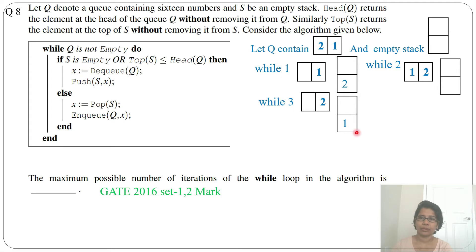So next we'll do while 4. So while 4, what will it do? Now if S is empty? No. Or top of S less than head of Q? So top of S is 1, head of Q is 2, so 1 is less than 2, yes. So then what we'll do? X equals dequeue(Q), so we'll just delete 2 and we'll push into stack. So now the queue will be empty and stack will be 1, 2.